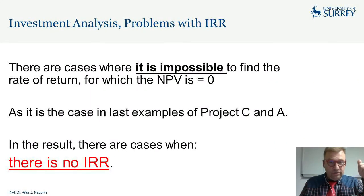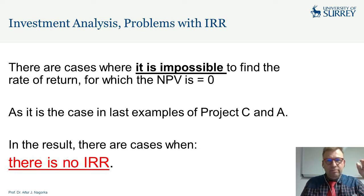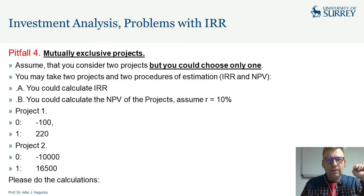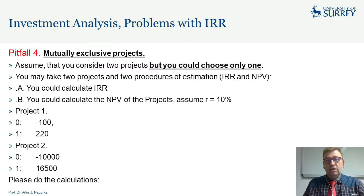Pitfall one was about which operation we are doing. Pitfall two was multiple internal rates of return. Pitfall three was the yes/no IRR problem. Now we have pitfall four: mutually exclusive projects. Assume you consider two projects but can choose only one, and you evaluate them using both IRR and NPV.